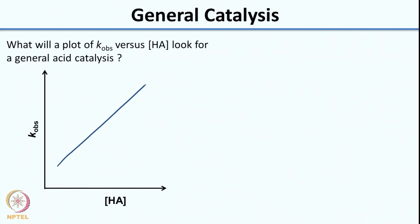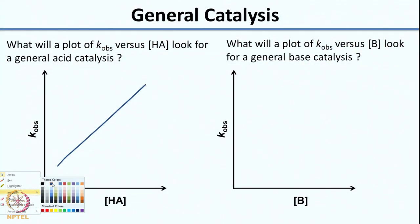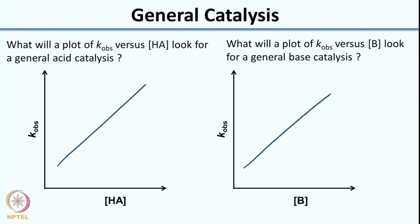What will the plot look like for general base catalysis — K_observed versus concentration of B? There is also a direct correlation here, so it will not be any different: it will also be a straight line. K_observed increases with the concentration of base B, just as it increases with concentration of acid HA in the other case.